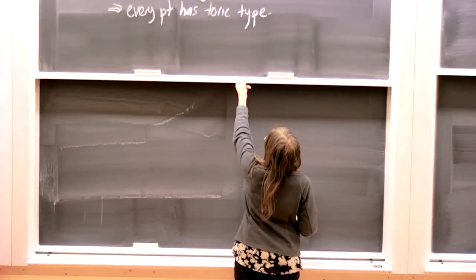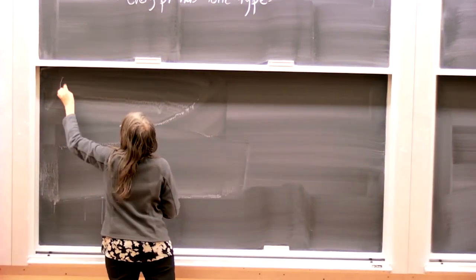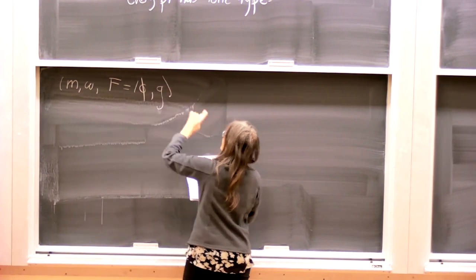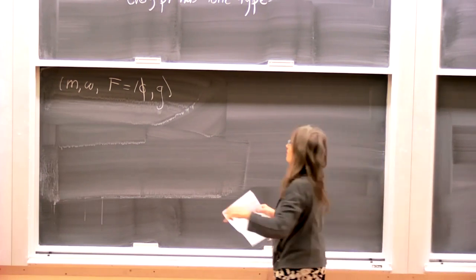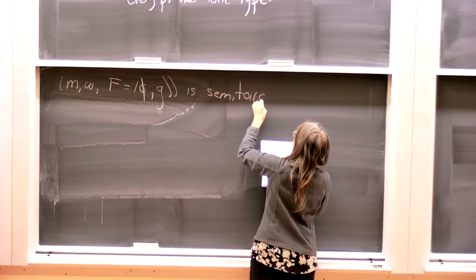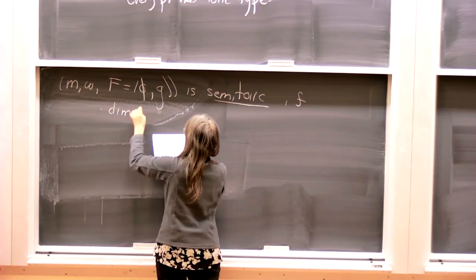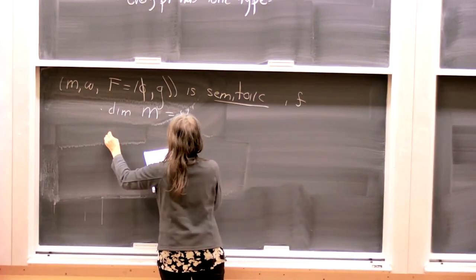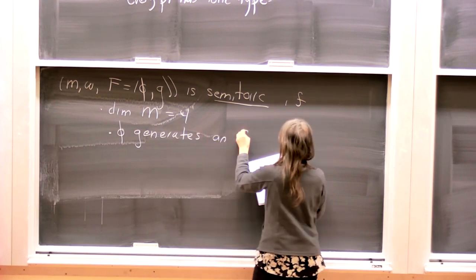And I'm going to say that my integrable system is toric if f generates an S1 to the n action. And notice that this implies that every point has toric type. So what does it mean to be semitoric? So I'm going to write my f instead of as f1, f2, I'm going to write it as phi, g. And I'm going to say this is semitoric if we're going to have three conditions. First of all, this only applies in the four dimensional case.